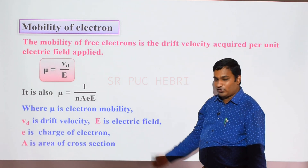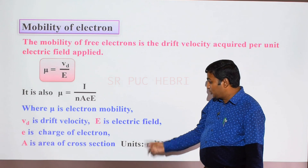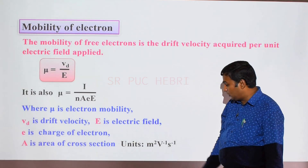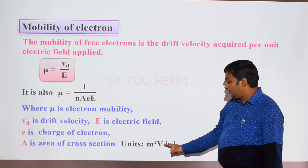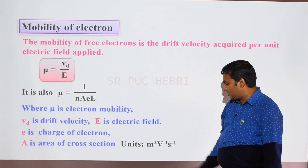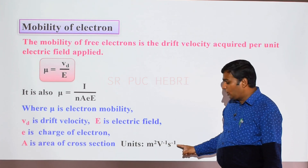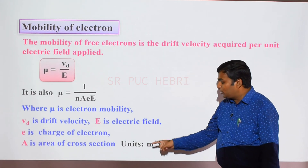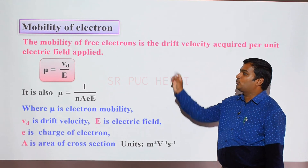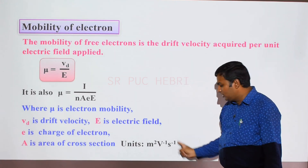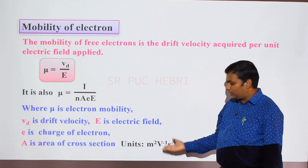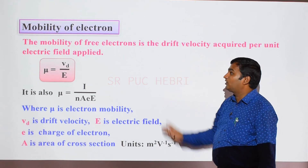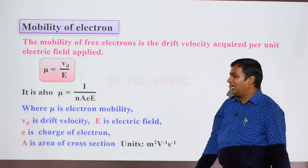The unit for electron mobility is meter squared per volt per second (m² V⁻¹ s⁻¹). This is an important exam question — they often ask what unit is used to measure mobility of an electron, and it has already appeared in annual exams.